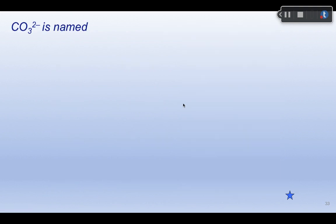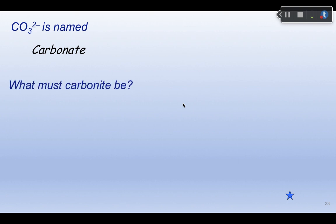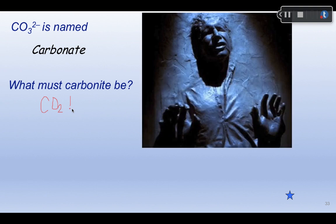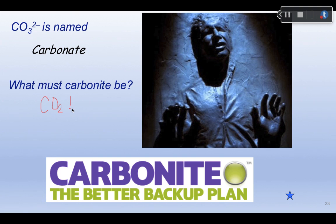So CO3 minus 2 is called carbonate. One less oxygen would be CO2, but that's just a gas — not an ion. There is no carbonite ion in chemistry! You may have heard 'carbonite' from the original Star Wars movie where Han Solo got frozen in carbonite, or from a cloud backup service — but carbonite is clearly not going to show up in chemical compounds.